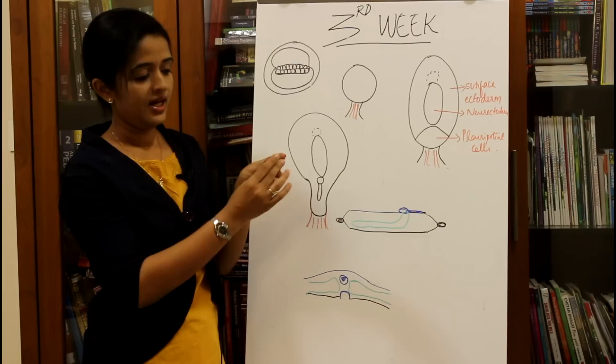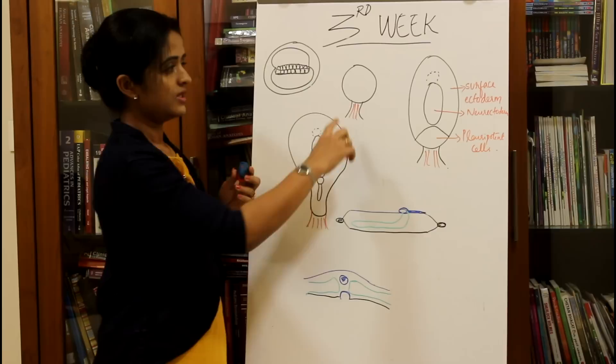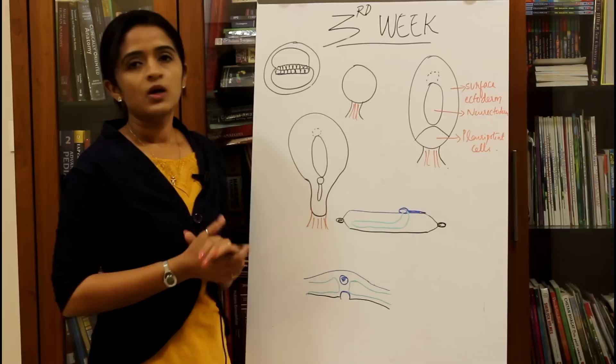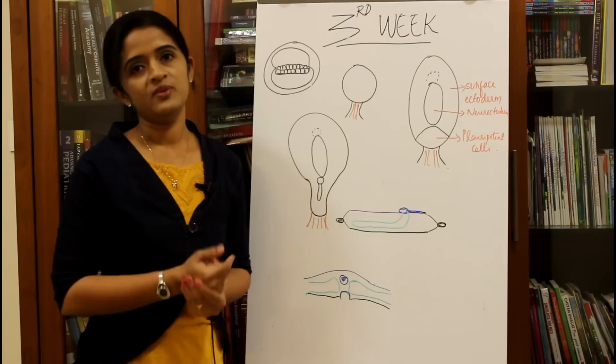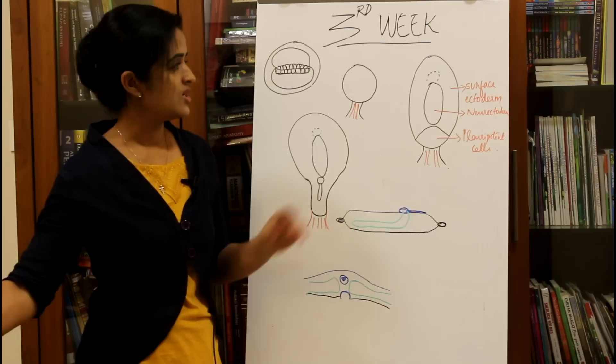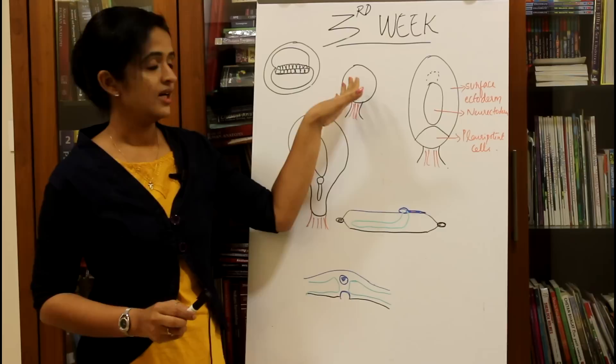The cephalic end will be broadened and the caudal end will be tapered. So first the embryonic disc is circular in section, then it becomes elongated into a pear-shaped embryonic disc. From the second week onwards, we discuss changes in the embryo under two headings: changes for the embryoblast and changes for the trophoblast. Let's see the embryoblast changes first — the embryonic disc is circular when viewed from above.